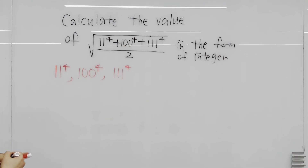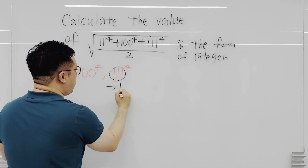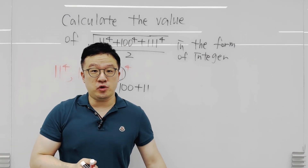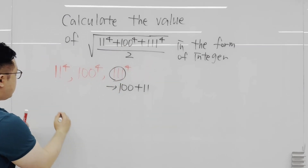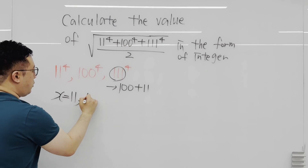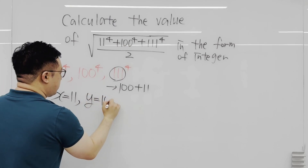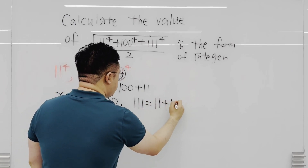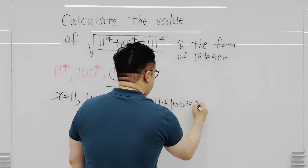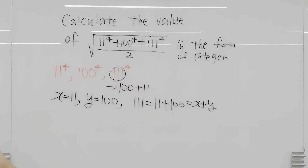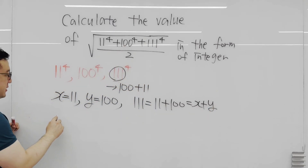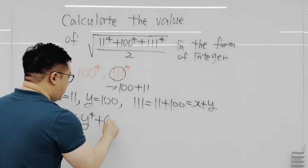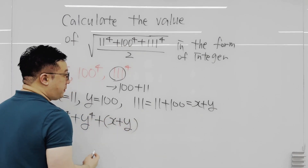What we can notice is that 111 is the same as 100 plus 11. So instead of using the numbers, we can introduce two variables x and y. We set x equal to 11 and y equal to 100, so 111 becomes x plus y. The numerator is then x⁴ plus y⁴ plus (x+y)⁴.